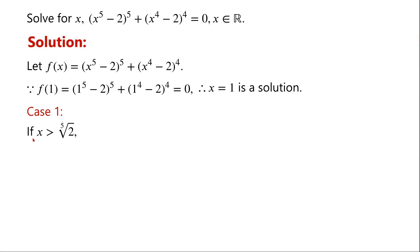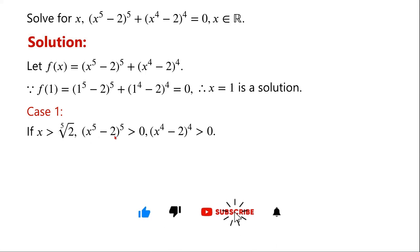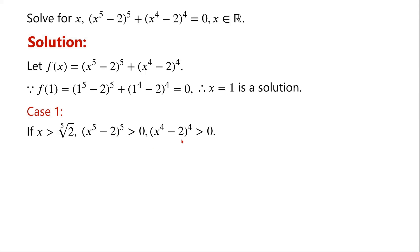Case 1: if x is greater than the fifth root of 2, then x to the power of 5 minus 2, to the power of 5, is greater than 0, and x to the power of 4 minus 2, to the power of 4, is also greater than 0. So f(x) is greater than 0, meaning the left-hand side is always greater than 0 when x is greater than the fifth root of 2, so the equation has no solutions in this range.